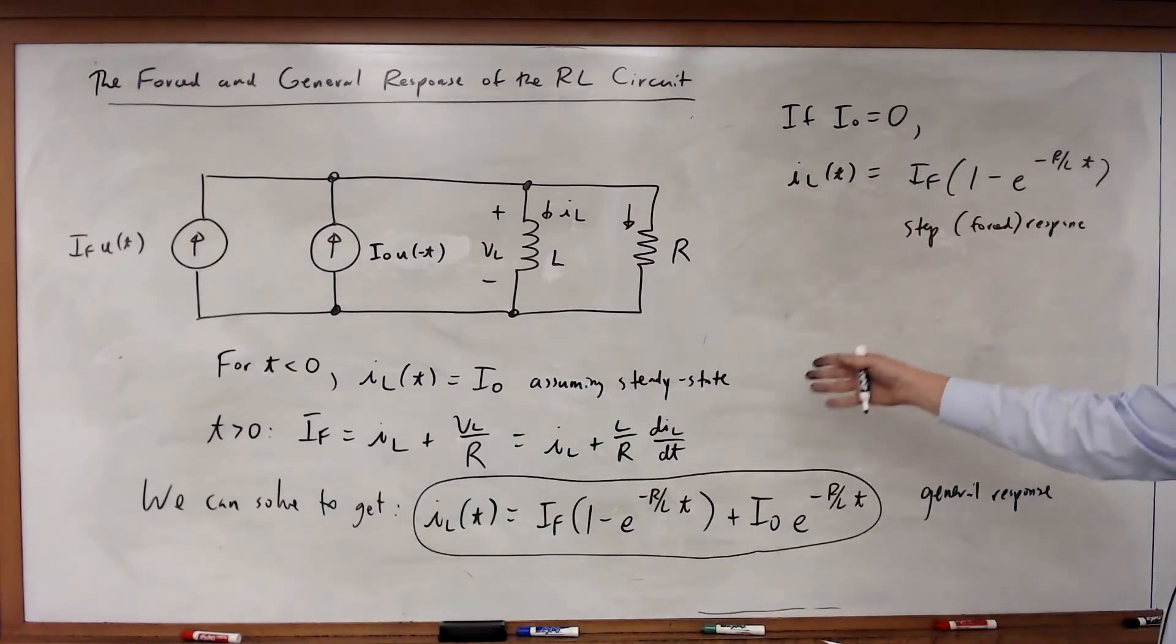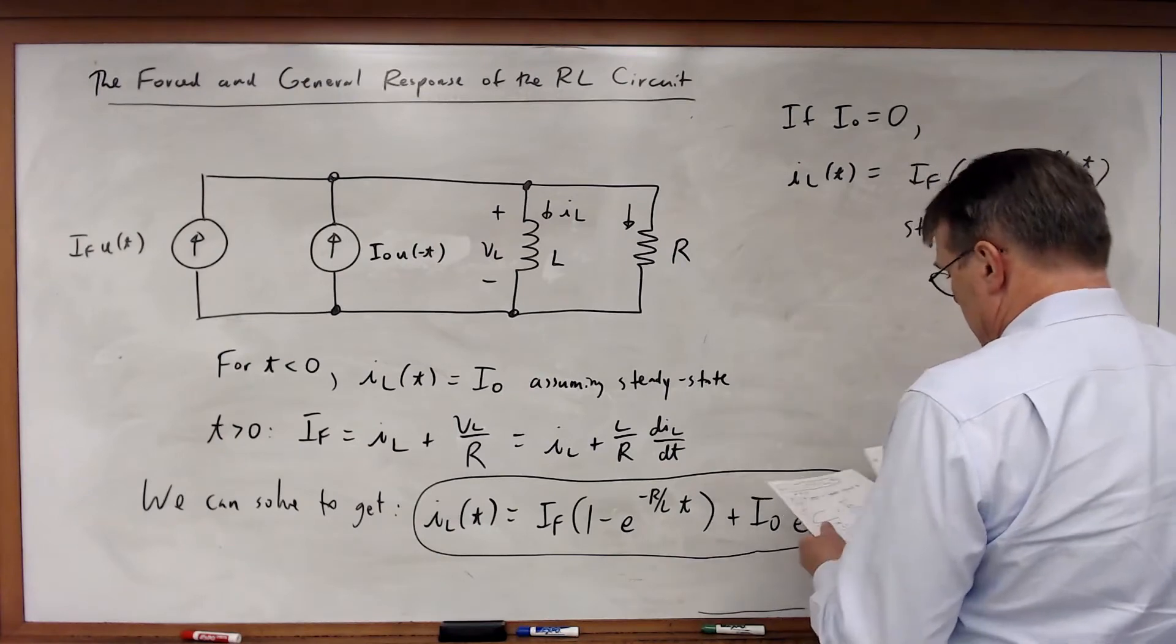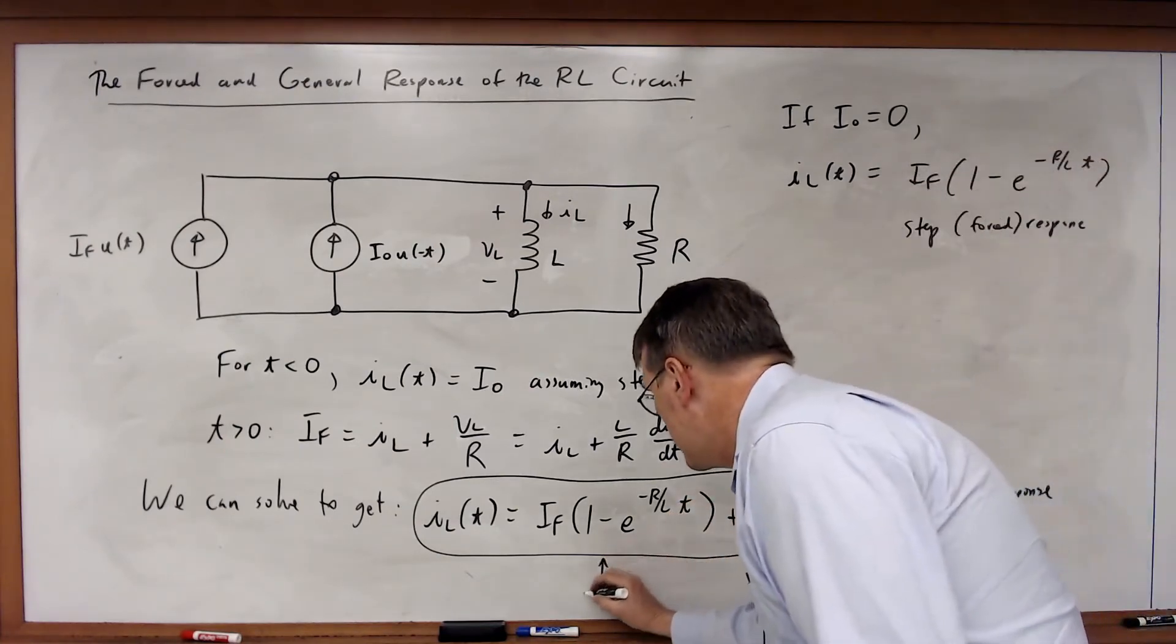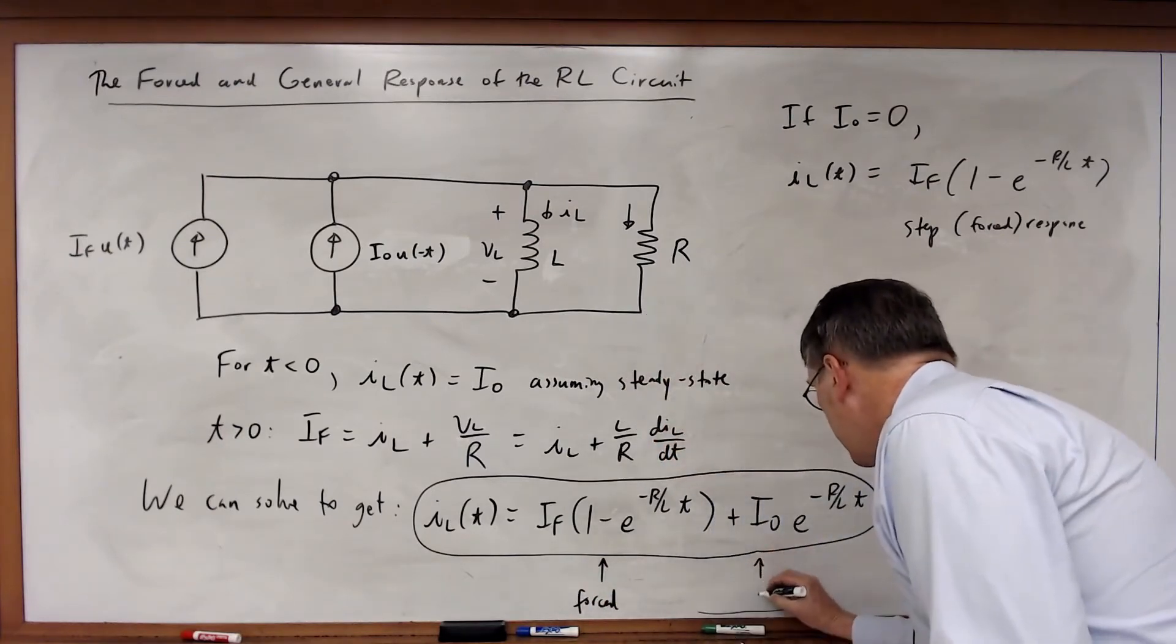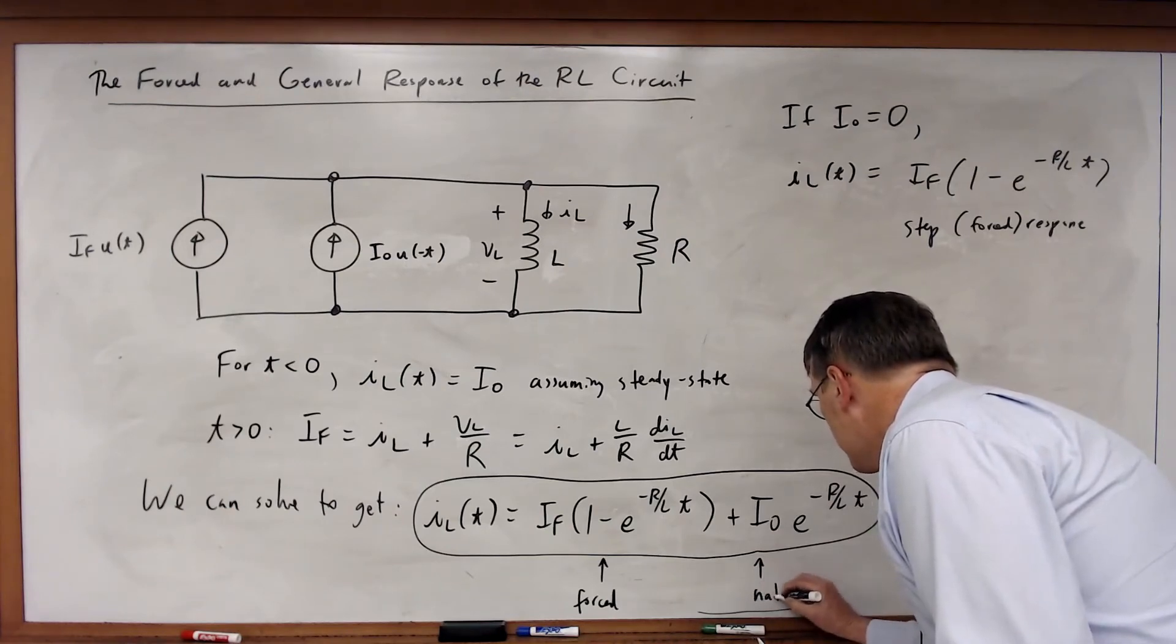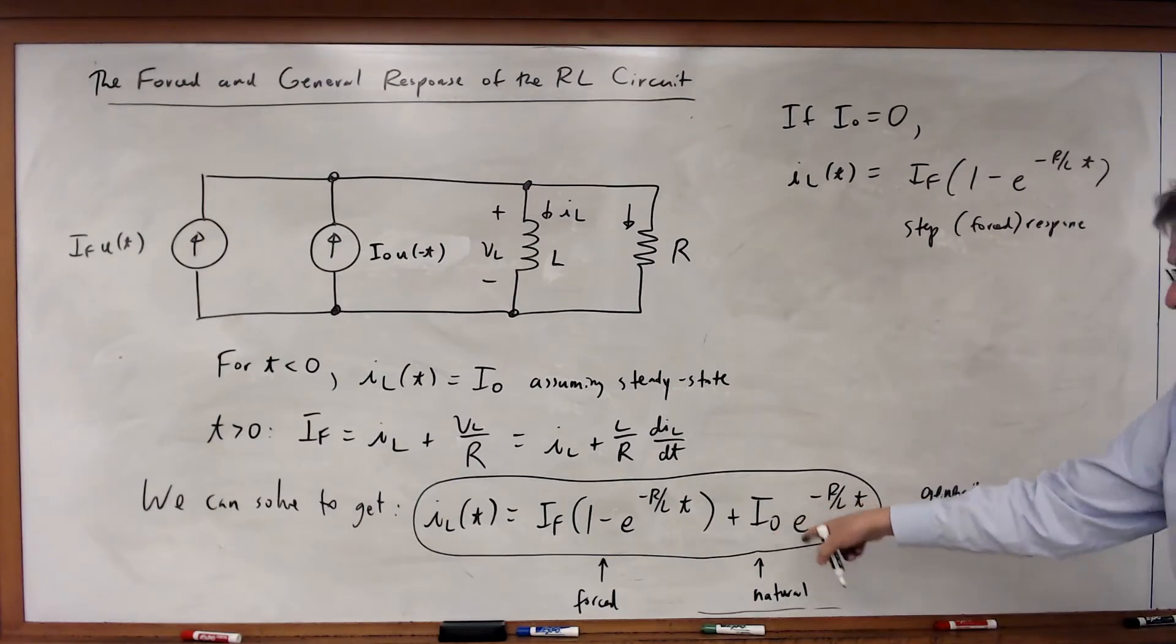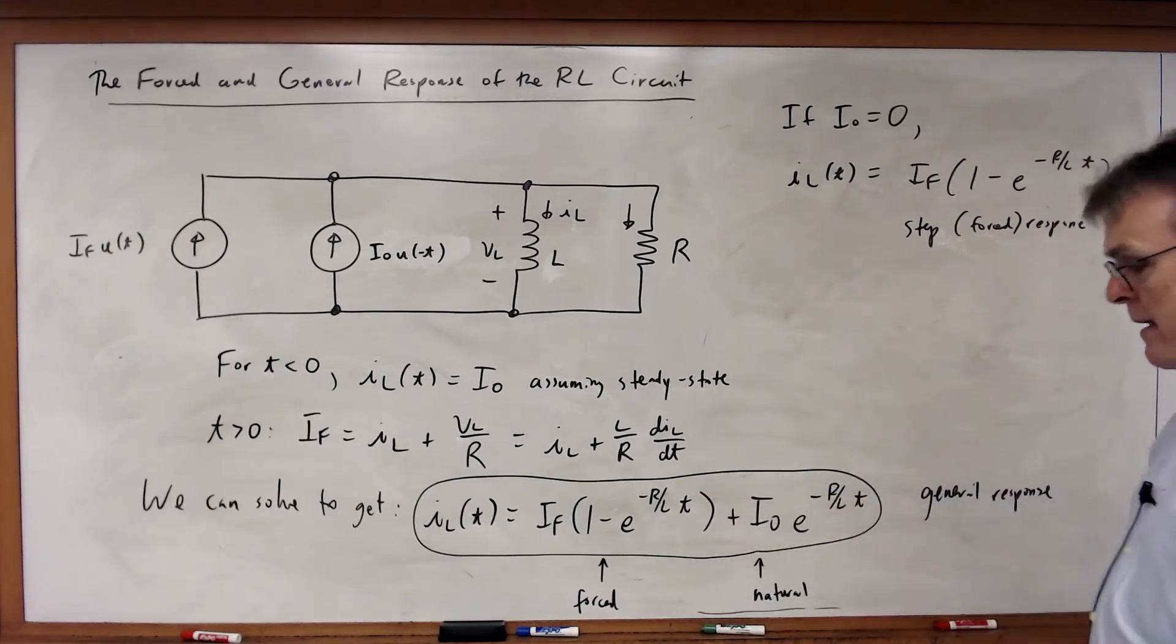If I were going to sketch this, what we're going to find is that, once again, this is a combination of the forced response and the natural response. So, once again, the general response is the superposition of the forced response and the natural response.